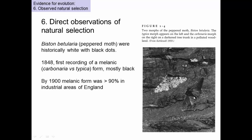We have two different moths shown here. Historically, these moths were almost all white with a little bit of black dotting. They lived in England, and people have been paying attention to and collecting these moths for a long time. In 1848 was the first recording of a melanic form — Biston betularia carbonaria. You can tell it's the same moth because physically it's exactly the same, it's just completely black. This was called the carbonaria type, to distinguish it from Biston betularia typica.